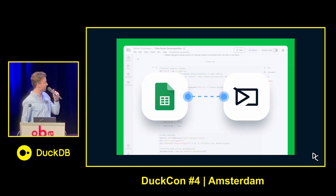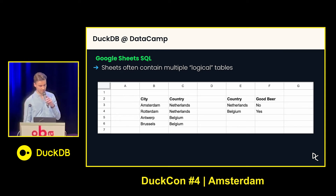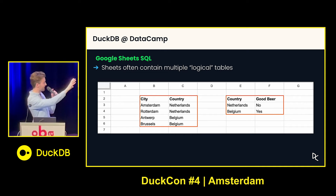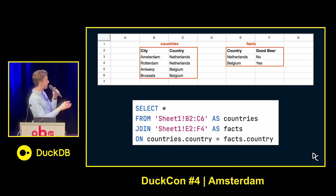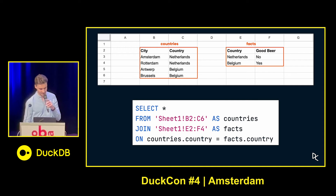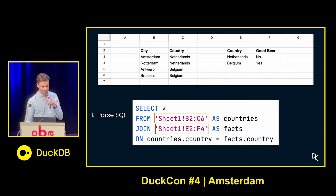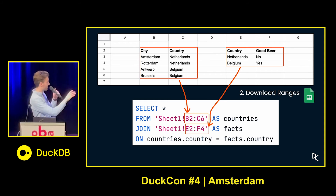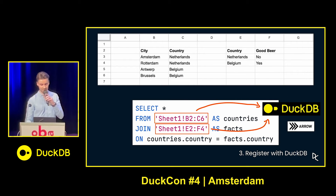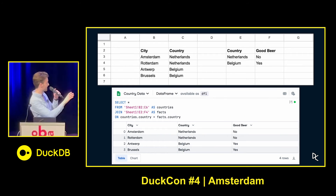A bit more interesting feature to talk about: Google Sheets SQL. Sheets often contain multiple logical tables. In this sheet, for example, you don't want the whole thing — that would contain null values and make no sense. In this case I have two tables, one with countries and one with facts about those countries — found this somewhere on HuggingFace. I want to let my users query these two things as if they're tables. How this works would be hard to implement, probably, but it's not — again, thanks to DuckDB. First we parse the SQL, then we know everything after the exclamation mark are our ranges. We download those from Google Sheets and pass them to DuckDB in Arrow format — not Parquet. And that just works. Now we can do a nice data analysis on Google Sheets.